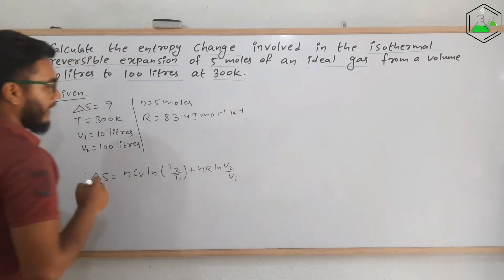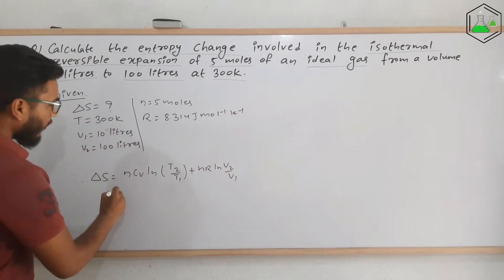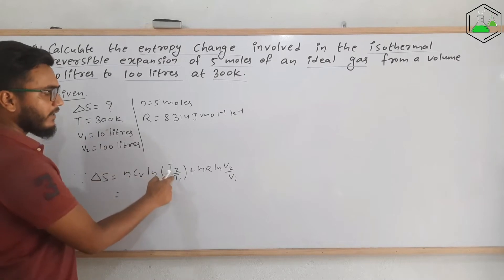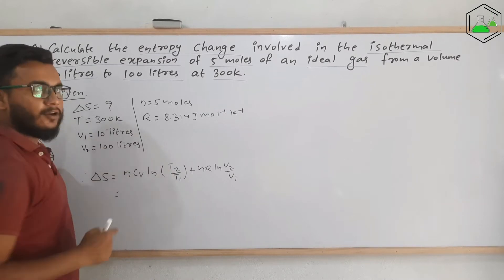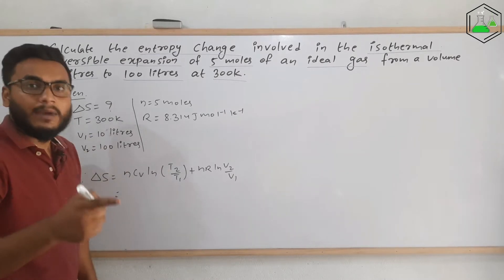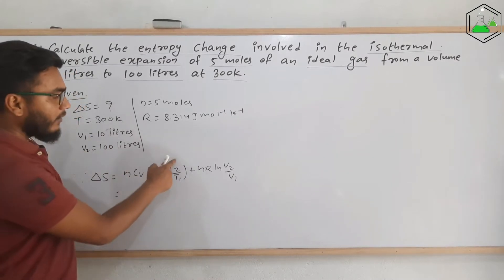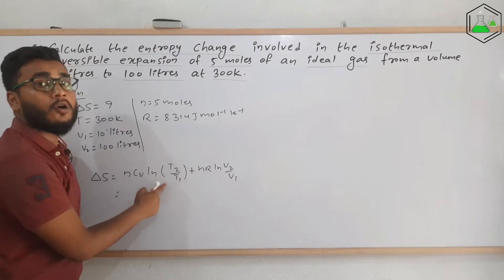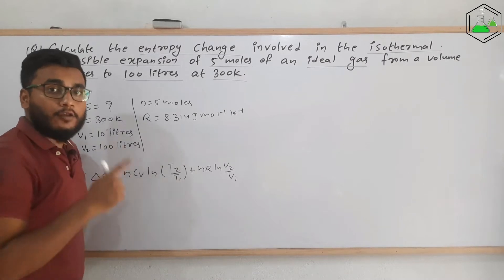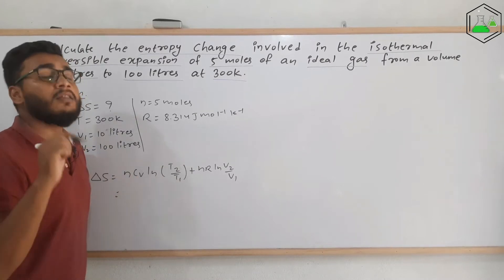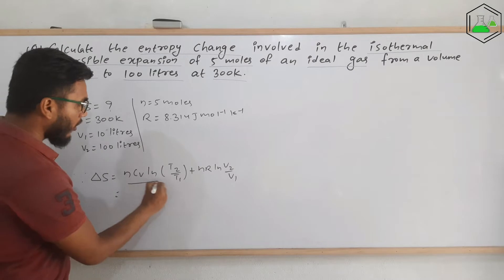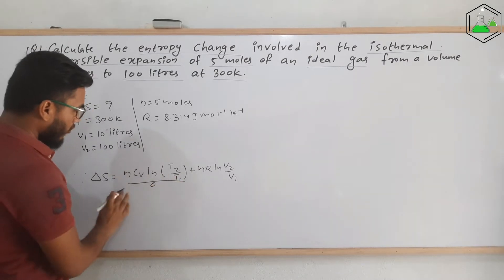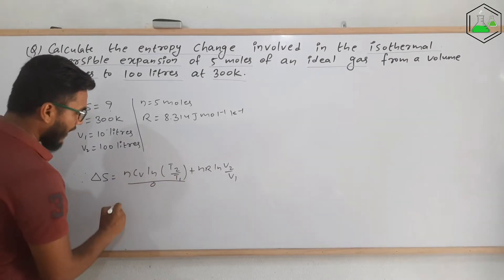Now, look here. As the temperature is not changing, T1 and T2 will have the same value and their ratio will be ln(1), which equals 0. So this whole first term will be zero, and we can simply write ΔS = nR ln(V2/V1).